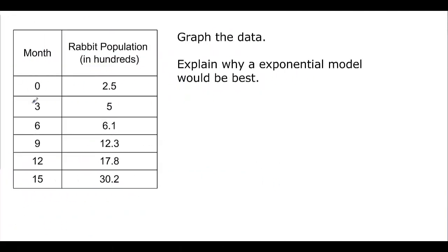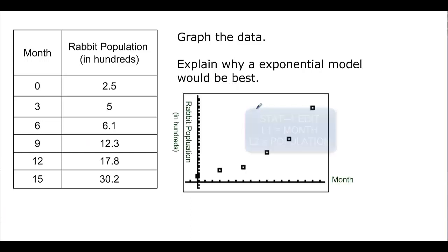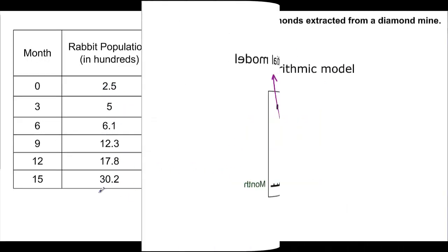We have this data here. We want to graph the data and then explain why an exponential model would be best. Go ahead and take a little bit of time to put that in there. And I get this scattergram. It's not perfect, but it looks very much like an exponential curve. If I kind of went like this, something like that. One reason it might be exponential is because of my graph. From zero to 15, it didn't really take very much. But I went from 2.5 up to 30. That's a lot bigger. It grew kind of slowly at the beginning, but then it started taking off.